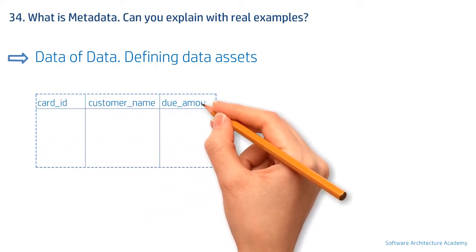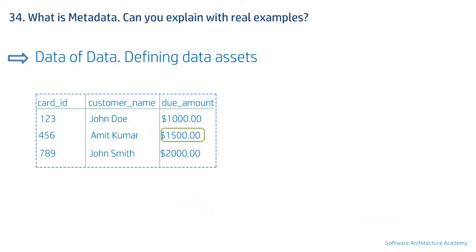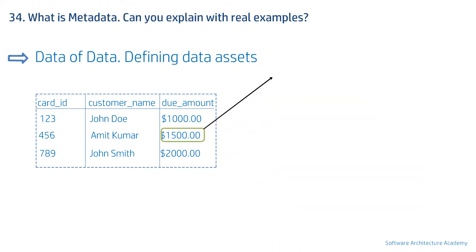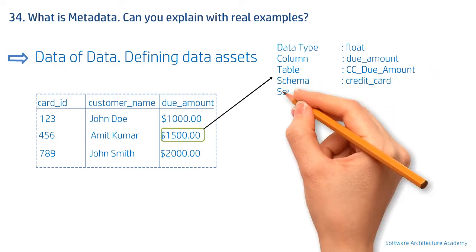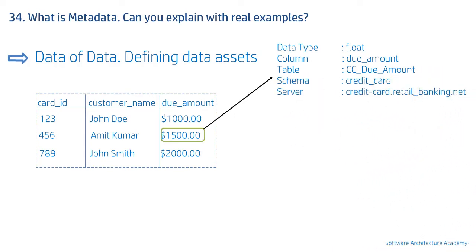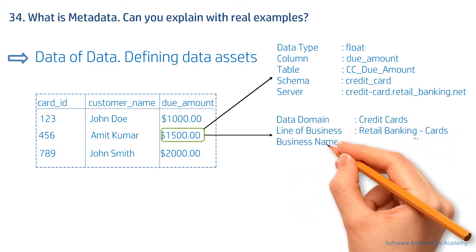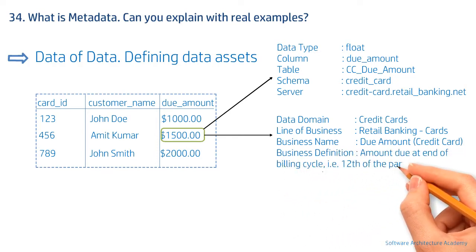Imagine a table that stores due amounts on credit cards with columns like card ID, customer name, and due amount. If I want to locate a field with the value $1,500 and understand its properties, I can locate it by its column, table, schema, and database server. Further, if I want to know its business meaning or relevance, I can access its data domain, line of business, business name, and business definition.